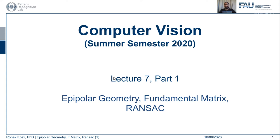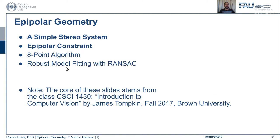Hello everyone, and welcome back to the Computer Vision Lecture Series. This is Lecture 7, Part 1. In this lecture we are going to talk about epipolar geometry, introduce some concepts of stereo vision, calculate disparity maps, and see how epipolar geometry evolves from that perspective. At the end of this part, we will compute the essential matrix and introduce the fundamental matrix as well.